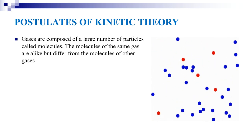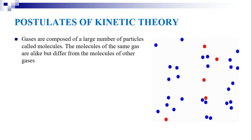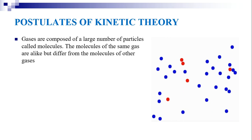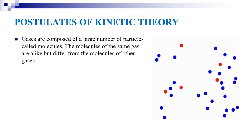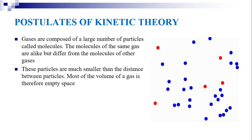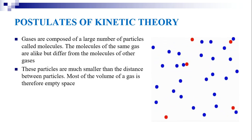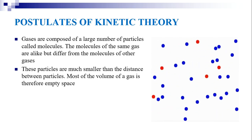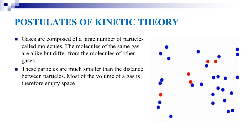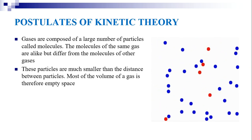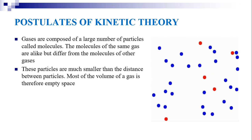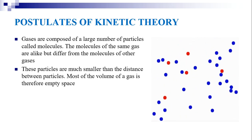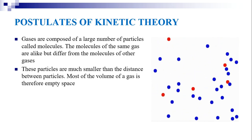Gases are composed of a large number of particles called molecules. The molecules of the same gas are alike — same as each other but different from molecules of other gases. These particles are much smaller than the distance between them, so the distance between particles is large compared to the size of molecules. Most of the volume of a gas is therefore empty space — all the gas molecules together would occupy a very small volume compared to the available volume of the vessel.